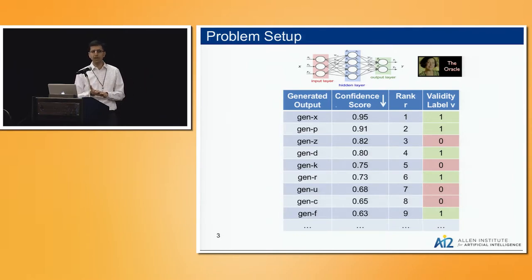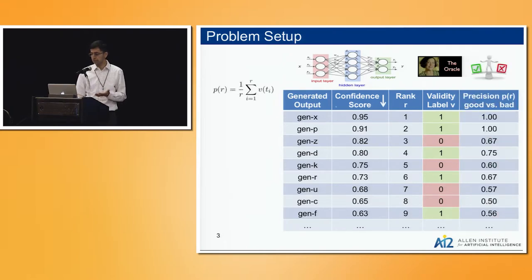If we had an oracle, we could pose each of these generated outputs to the oracle, and the oracle would say yes this is good, or no this is not good. And you get a list like green and red annotations. Hopefully if the model is good, the higher confidence things are better. So you will see more green at the top and more red at the bottom.